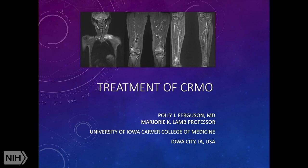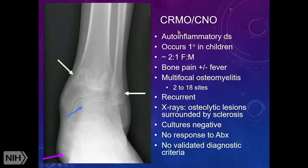I was charged with talking about the treatment of chronic recurrent multifocal osteomyelitis — also called chronic non-bacterial osteomyelitis, or CNO. It is an auto-inflammatory disease that predominantly occurs in children, more often girls than boys.